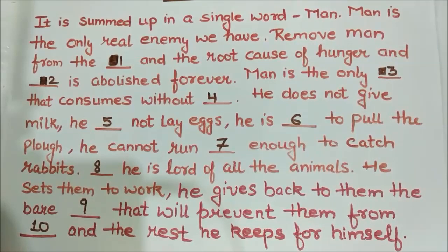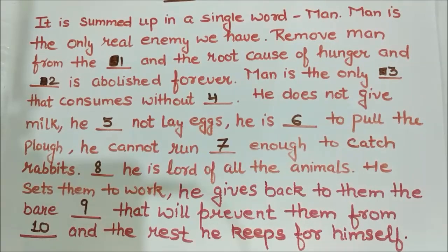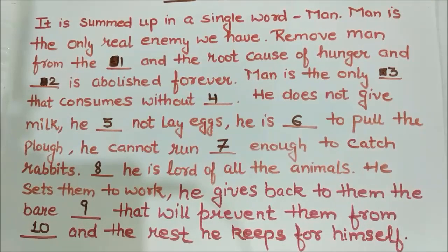It is summed up in a single word: man. Man is the only real enemy we have. Remove man from the ___ and the root cause of hunger and ___ is abolished forever. Man is the only ___ that consumes without ___. He does not give milk. He ___ not lay eggs. He is ___ to pull the plow. He cannot run ___ enough to catch rabbits. ___ he is lord of all the animals. He sets them to work. He gives back to them the bare ___ that will prevent them from ___, and the rest he keeps for himself.